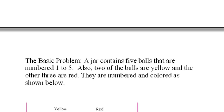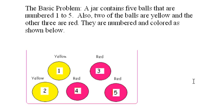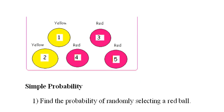Here's our basic problem that we're going to use. A jar contains five balls that are numbered one to five. Also, two of the balls are yellow and the other three are red. They are numbered and colored as shown below. We have these five balls, and we're going to randomly select balls out of that jar.